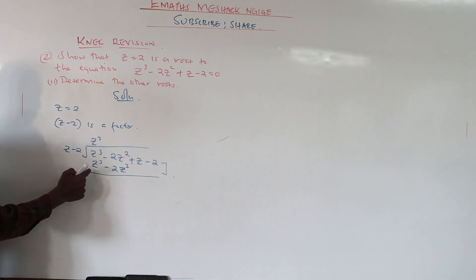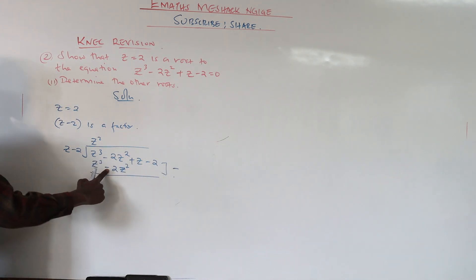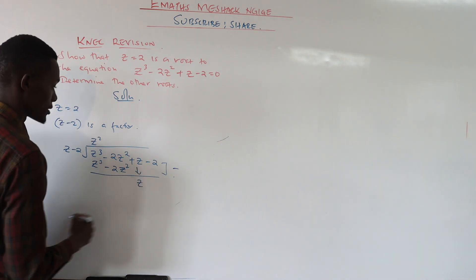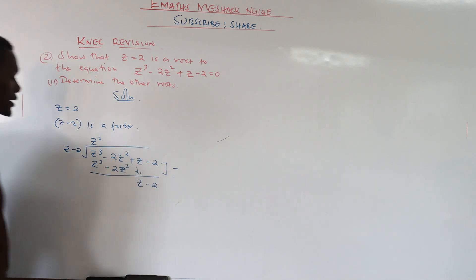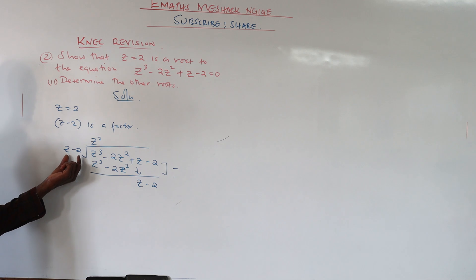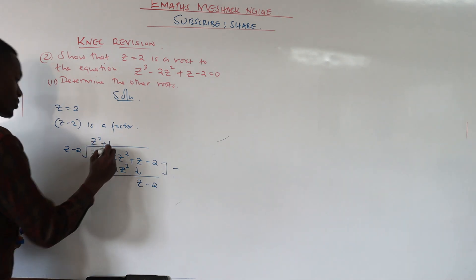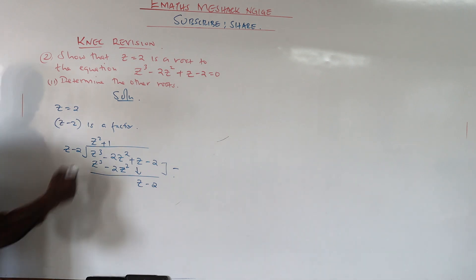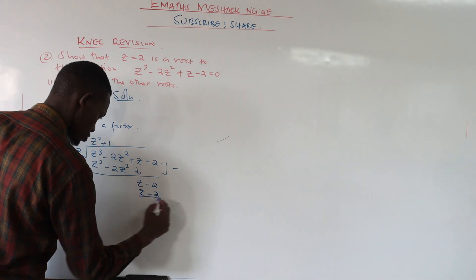Z cubed minus z cubed. Minus minus gives us a positive, so this minus that gives us zero. You drop your z and drop your negative 2. If you check these numbers, they are the same. What do you need to multiply with? With one. One times z gives us z. One times negative 2 gives us negative 2.